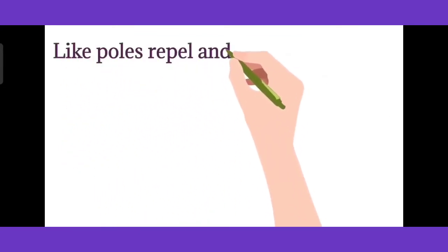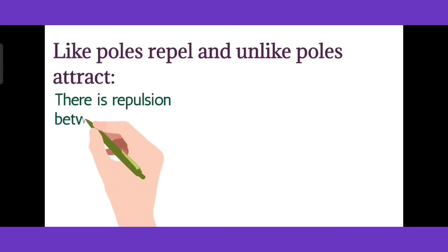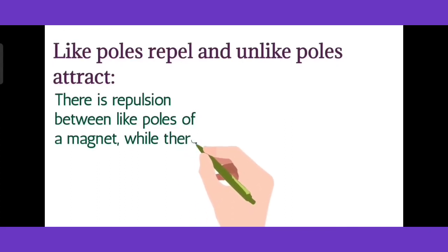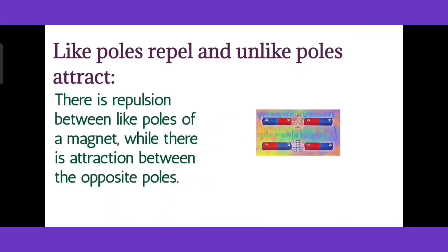Next is Like Poles Repel and Unlike Poles Attract each other. There is repulsion between like poles of the magnet, while there is attraction between the opposite poles.